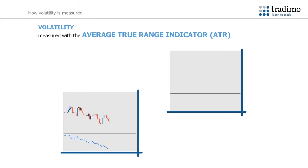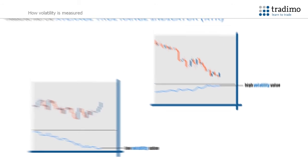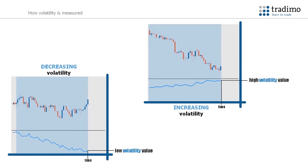The Average True Range Indicator, also known as ATR, is a tool that measures the volatility but gives an actual value. So rather than observing the price in relation to an indicator, such as a moving average or Bollinger Bands, the ATR gives a value. The higher the value, the higher the volatility. The ATR also shows whether the volatility is increasing or decreasing, as well as what the volatility is at a given time.